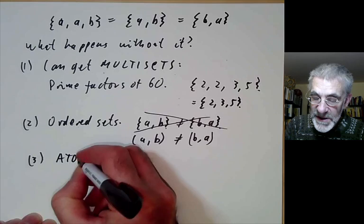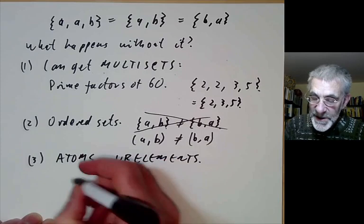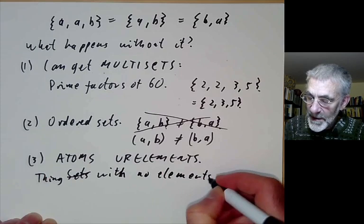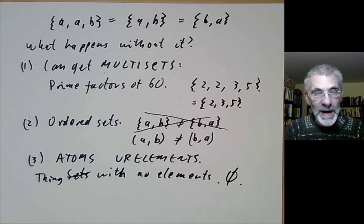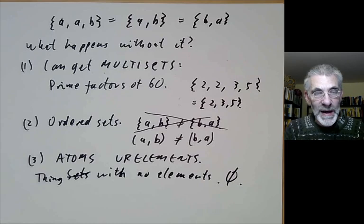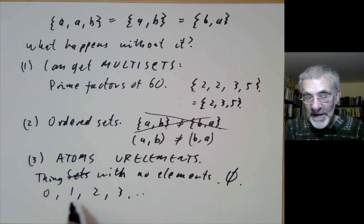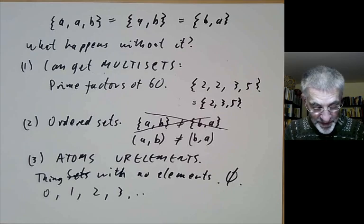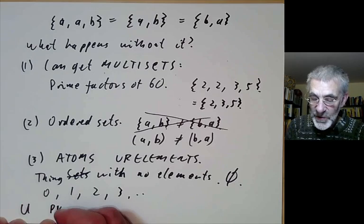Third, you can have things called atoms or sometimes called ur-elements which are sets with, well they're not sets, they're things with no elements. So in particular the empty set has no elements but you might also allow some other things to have no elements. For instance, in the early days of set theory people would sometimes consider the integers 0, 1, 2, 3 and so on to be primitive things that didn't have elements but you sort of incorporate them into the definition of set theory.